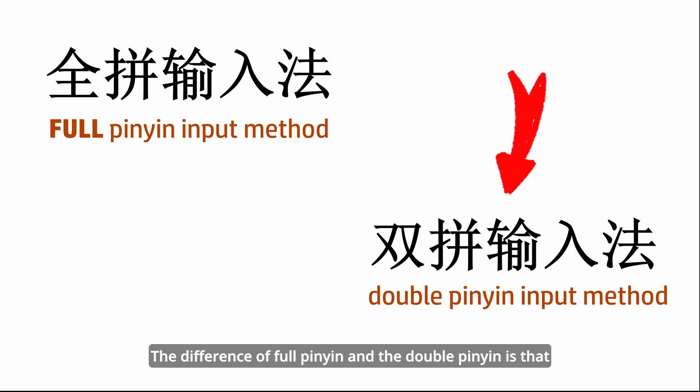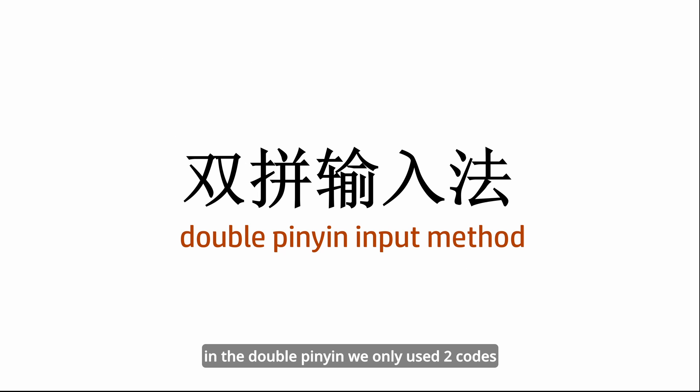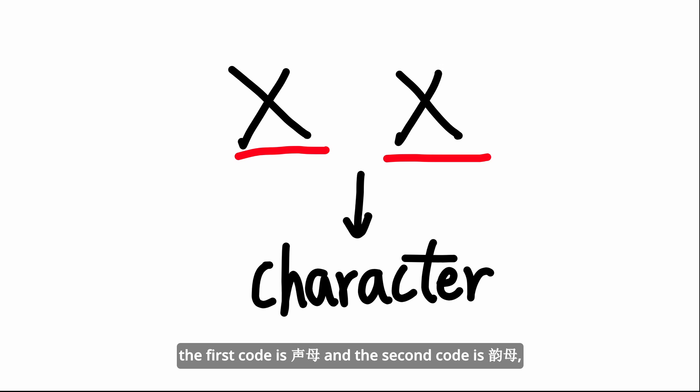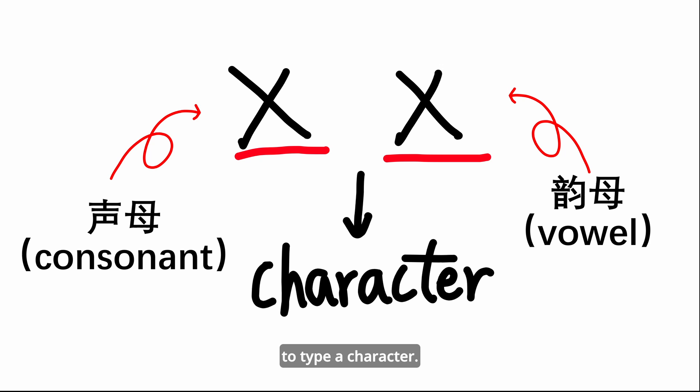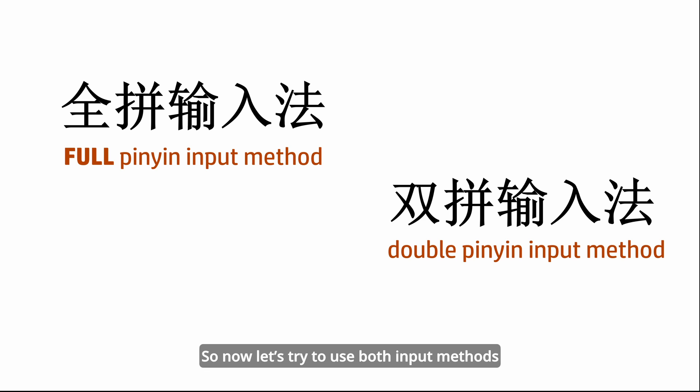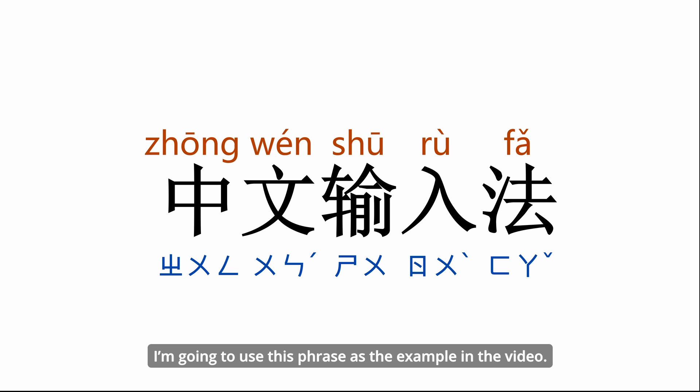The difference between full pinyin and double pinyin is that in double pinyin we only use two codes. The first code is shengmu and the second code is yunmu. So now let's try to use both input methods to type some words. This time I'm going to use a phrase as the example.